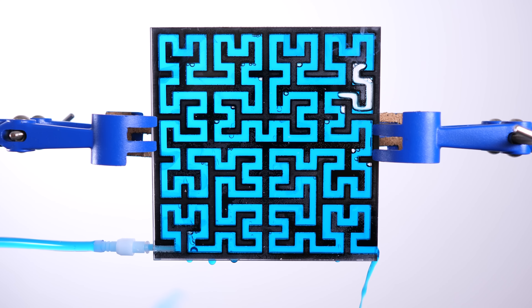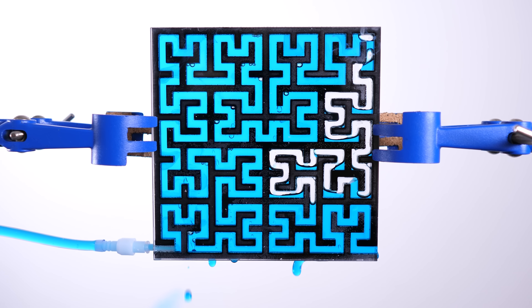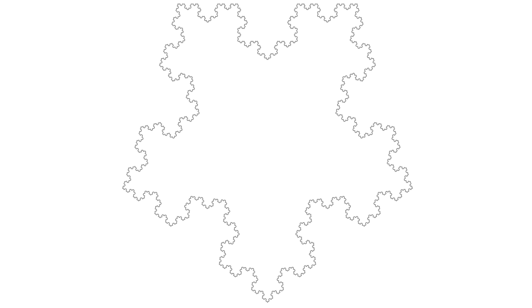So what is a space filling curve? Well, it's a curve in the mathematical sense, meaning it's a one-dimensional thing. It's infinitely thin. How is it that something infinitely thin can fill two-dimensional space? The answer is by being a fractal.